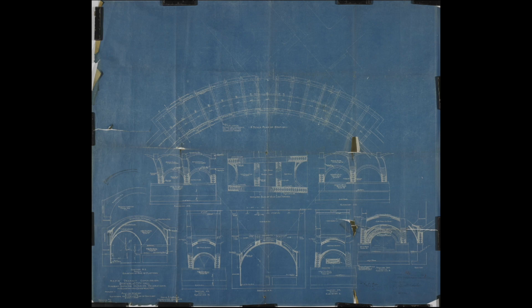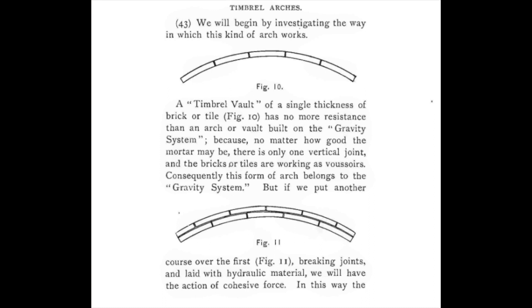Mortar is a very critical component of this method of construction and as Guastavino outlines in his essay on the theory and history of cohesive construction, without using mortar, essentially one layer of vossoirs creates a system in which gravity and friction are the primary forces that support an arch.